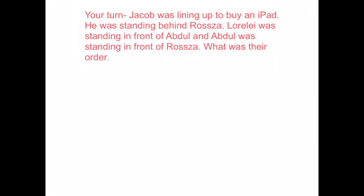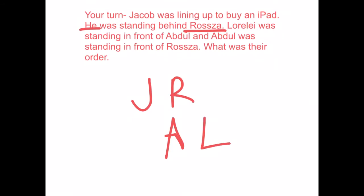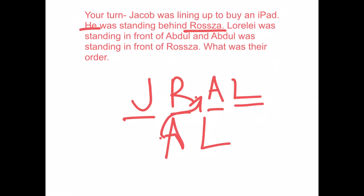Hopefully you've gone through it, and now we can go and see if we can solve it together as a class. So let's look at what we know. The first thing says Jacob is standing behind Rosa. So if Rosa's here, then Jacob is standing behind her. Lorelai is standing in front of Abdul. So if Abdul's here, Lorelai is in front of him. But it says Abdul was standing in front of Rosa. So Abdul is in front of Rosa — Abdul should be there. If Abdul's there, then Lorelai needs to be there. So the order should go: Lorelai's first, Abdul's second, Rosa's third, and Jacob's fourth.